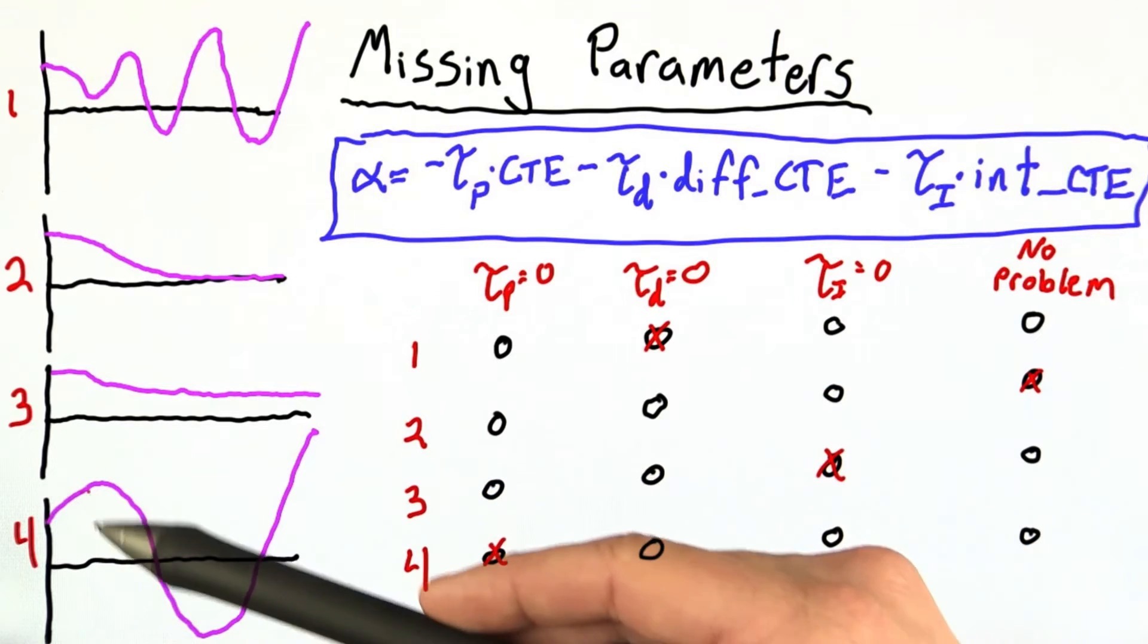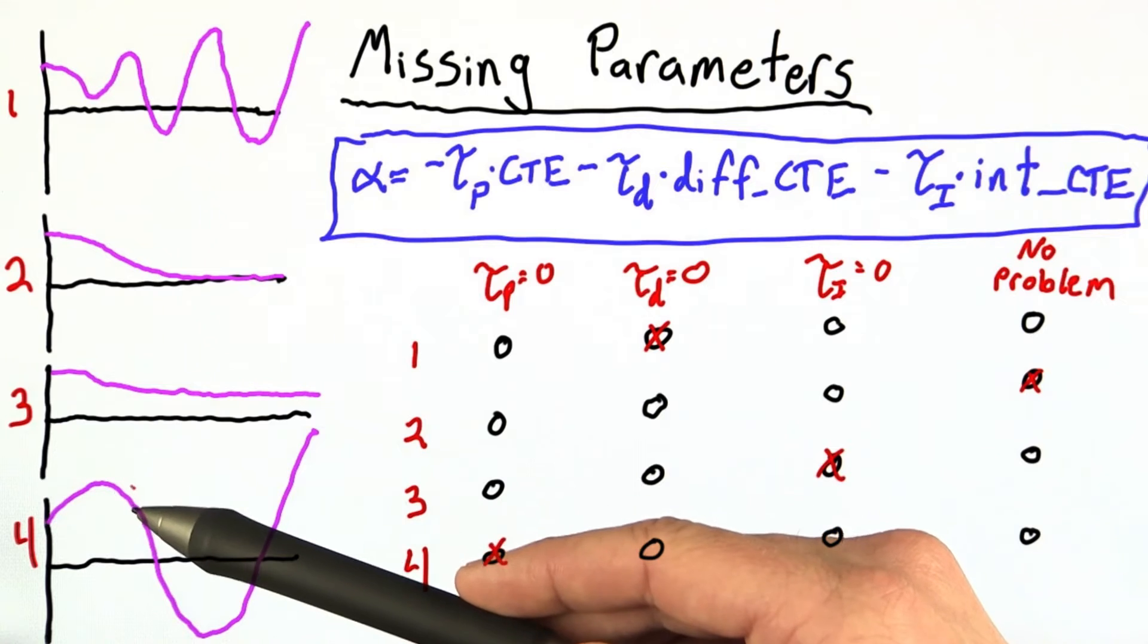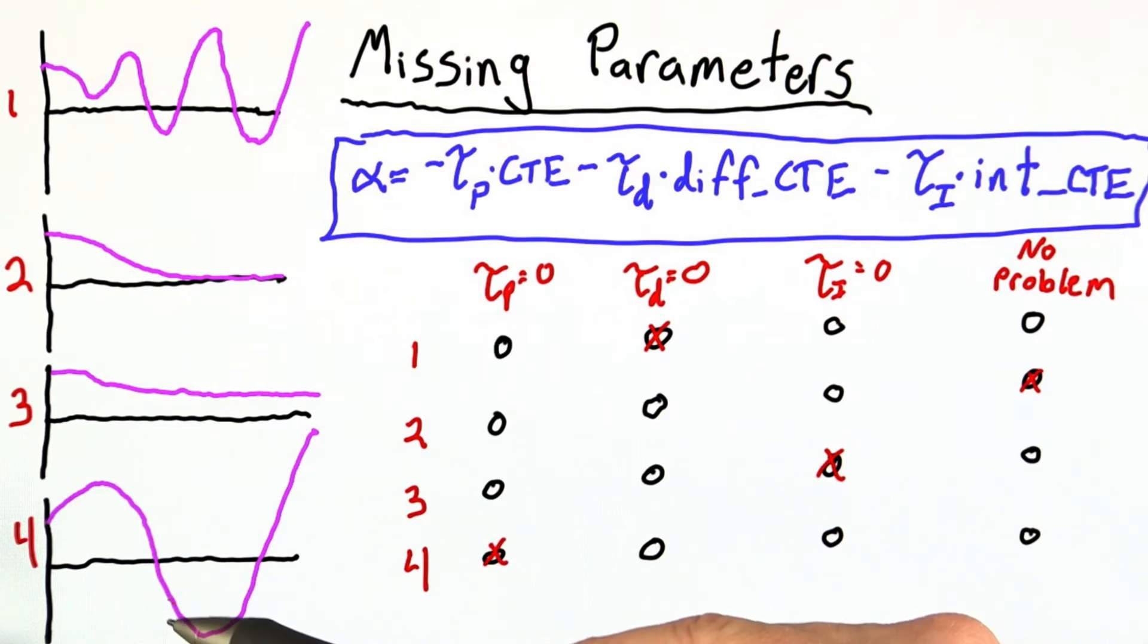Of course, as we accumulate error, that gets corrected for and we steer down, but eventually we get into this sort of oscillating behavior.